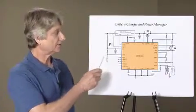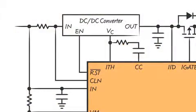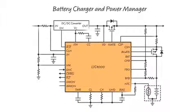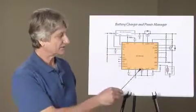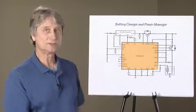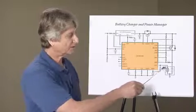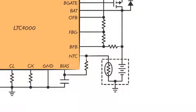Input current regulation prevents overloading limited current sources. Accurate float voltage regulation maximizes charge energy and battery life. C over X or timer termination prevents overcharging. Temperature qualified charging is available for fast charging without danger of shortening battery life.